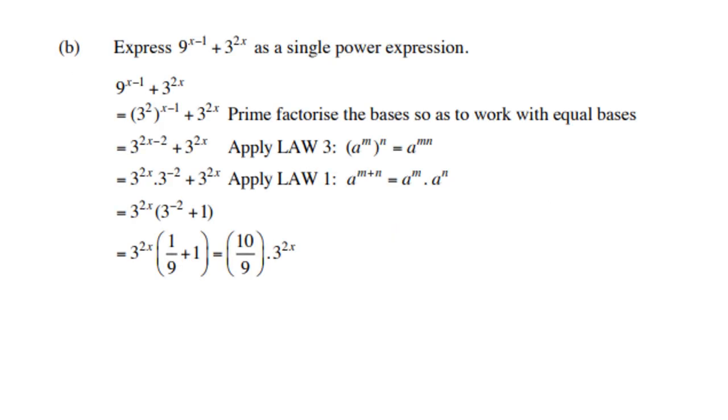Let's do example B: 9 to the power x-1 plus 3 to the power 2x as a single power expression. 9 is not a prime number, so 3 to the power 2, which gives 3 to the power 2x-2 plus 3 to the power 2x. Then split 3 to the power 2x-2 into 3 to the power 2x times 3 to the power negative 2. Now the common factor is 3 to the power 2x. Take it out as a common factor.